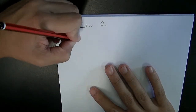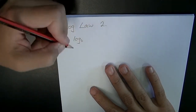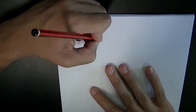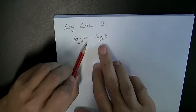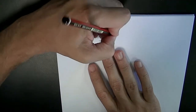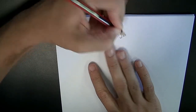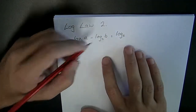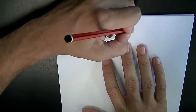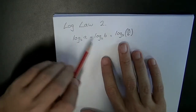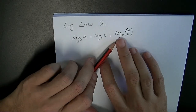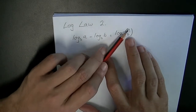We can write this as log base x — it doesn't matter what the base is — a minus log base x b. Those bases need to be the same, but it doesn't matter what they are. It equals log base x of a over b. So: log base x of a minus log base x of b equals log base x of (a divided by b), all in brackets.